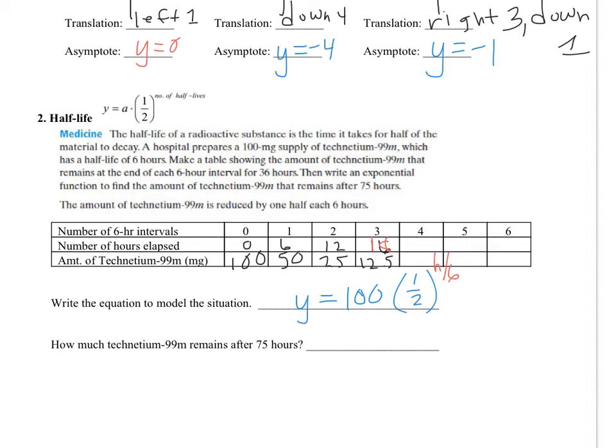So even if you're given like 1 hour or 3 hours or 1.725 hours, you're still going to divide it by 6 to get the number of half-lives. So how much technetium-99m remains after 75 hours? You're going to want to use y equals 100 times 1 half to the 75 over 6. So when you calculate that, be careful. So this is 75 divided by 6 is going to give you the number of half-lives. So that's 12.5 half-lives. That was an exact number, no rounding.